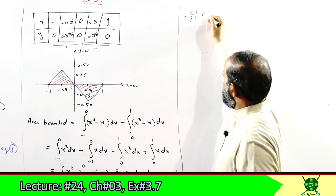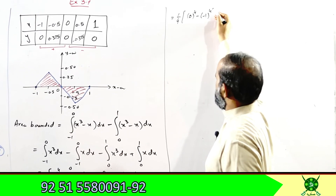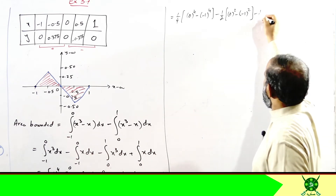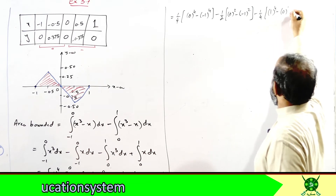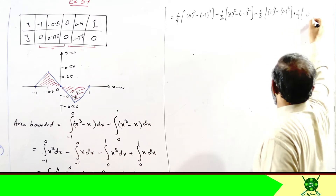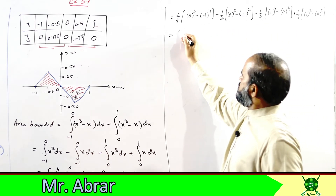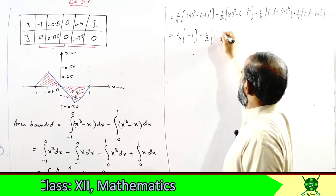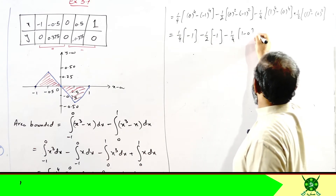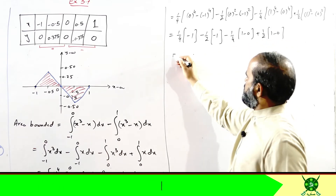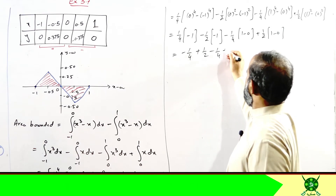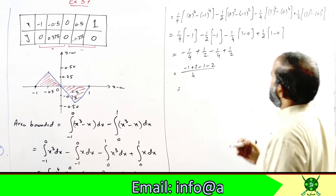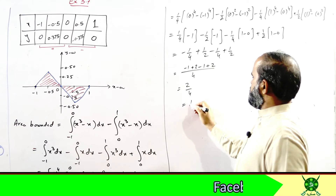Separating the integrals: ∫₋₁⁰ x³ dx − ∫₋₁⁰ x dx − [∫₀¹ x³ dx − ∫₀¹ x dx]. Evaluating: [x⁴/4]₋₁⁰ − [x²/2]₋₁⁰ − [x⁴/4]₀¹ + [x²/2]₀¹. Substituting limits: (0 − 1/4) − (0 − 1/2) − (1/4 − 0) + (1/2 − 0) = −1/4 + 1/2 − 1/4 + 1/2. LCM 4: (−1 + 2 − 1 + 2)/4 = 2/4 = 1/2 square units.